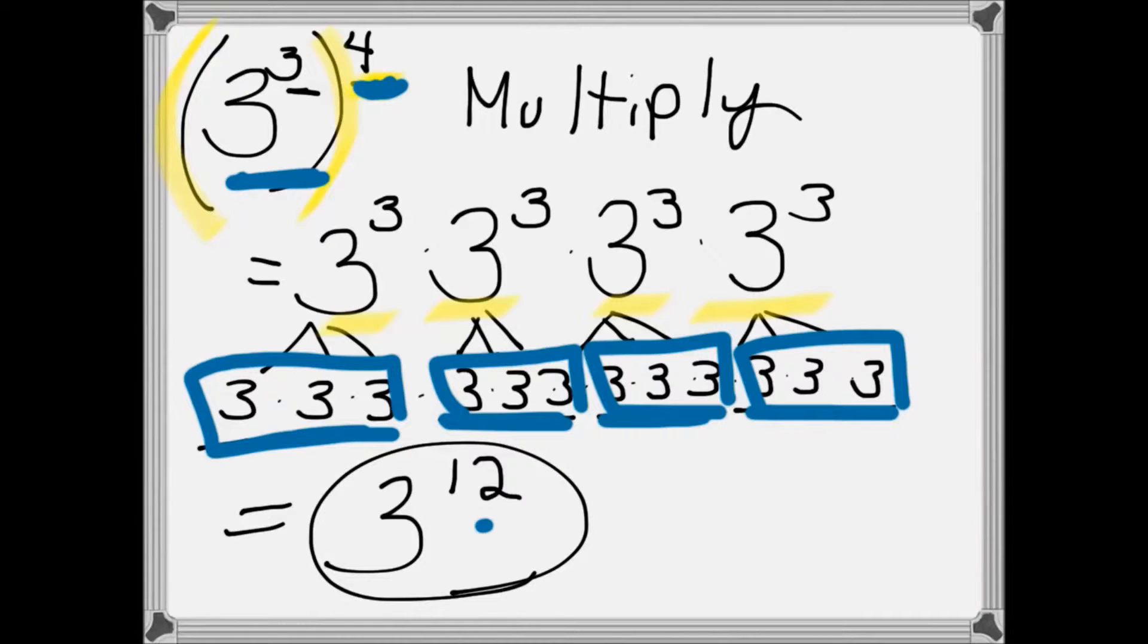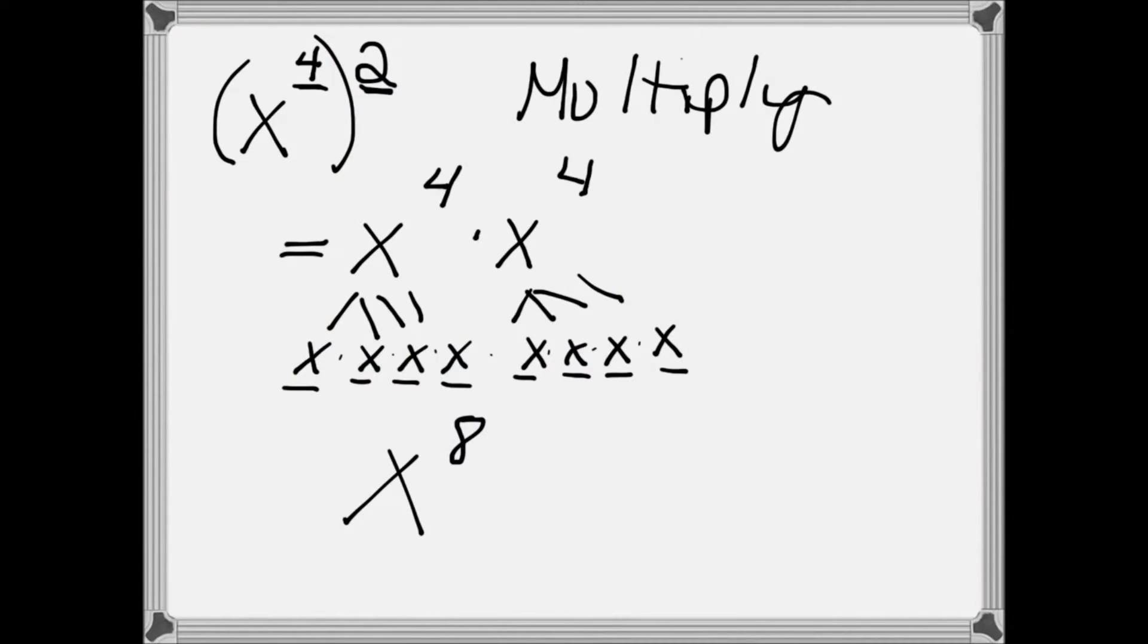Let's look at another one when we do not have a base that is a numerical value. In this problem, we have x to the 4th squared. We have x to the 4th twice, so we write it as x to the 4th times x to the 4th.